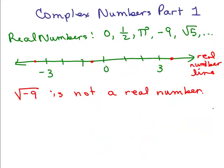So far, we've worked with the real number line, where any point on this number line was called a real number. So, we had like 0, one half, pi, negative 9, square root of 5 — those are some examples of real numbers. It could be positive, negative, 0, rational or irrational.